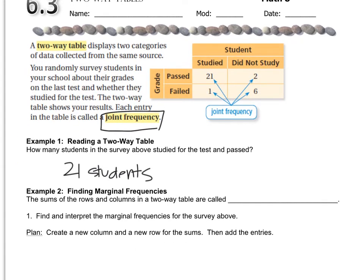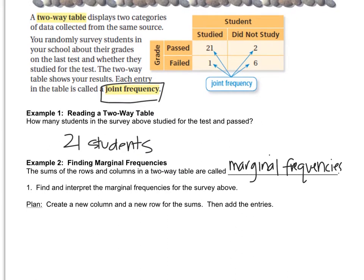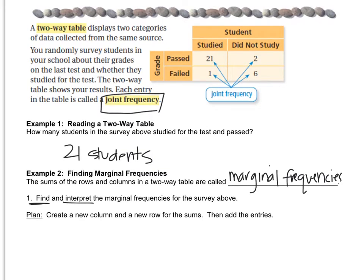Now, you might want to know the total number of people who passed and the total number of people who studied, and those are called marginal frequencies. In number one, we have to find and interpret the marginal frequencies for the survey above. Remember, find means to get the number, and interpret means to write a sentence using the number in the story. It says to create a new column and a new row for the sums.